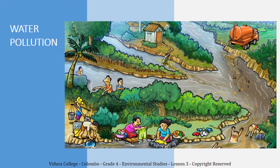Water pollution is when waste, chemicals, or other particles cause a body of water — for example, rivers, oceans, or lakes — to become harmful to the fish and animals that need water to survive. Water pollution can disrupt and negatively impact nature's water cycle as well. Sometimes water pollution can occur through natural causes like volcanoes, algae blooms, animal waste, and silt from storms and floods.